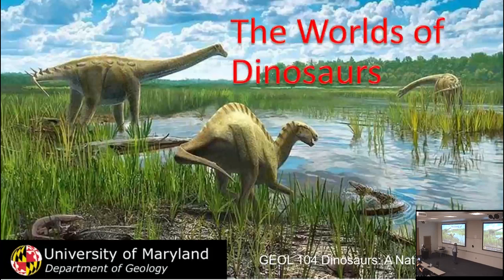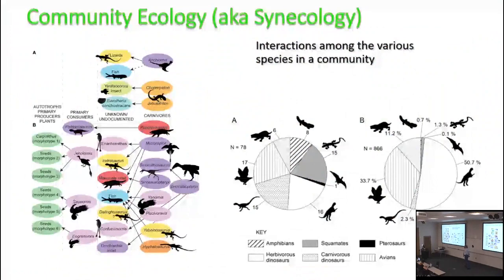We've been looking at the history of the dinosaur groups in the context of phylogenetics — going up each of the different branches and seeing the diversification, the nature adaptations, and the ecology of those animals. What we were looking at in the last several weeks is called autecology, or functional ecology — the ecology of the organisms themselves. But there's another way to look at ecology called community ecology, or sometimes syn-ecology — 'syn' meaning together.